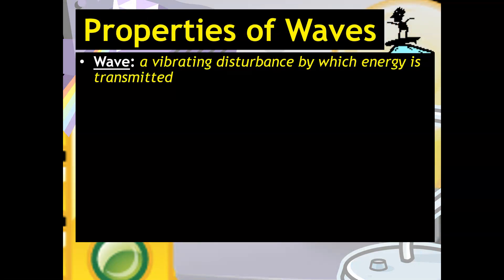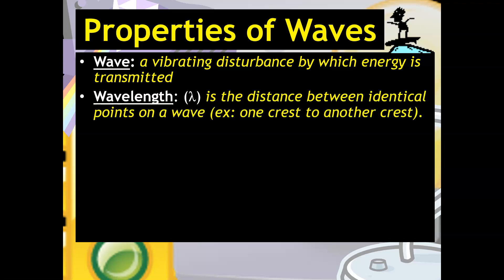So now let's talk a little bit about properties of waves. So a wave we say is a vibrating disturbance by which energy is transmitted. When we talk about the properties of waves, wavelength is often something we describe. Wavelength has the symbol lambda. It kind of looks like an upside down Y. It is the distance between identical points on a wave. So for example, one crest to another crest.